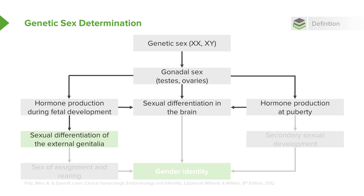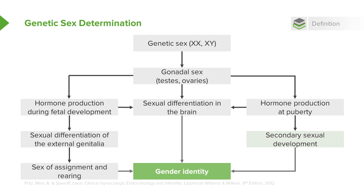During fetal production of hormones, you get sexual differentiation of the external genitalia, which leads to sex assignment at birth and gender rearing. While at puberty, secondary sexual development is due to the production of hormones either from the testes or ovaries, which leads to gender identity.